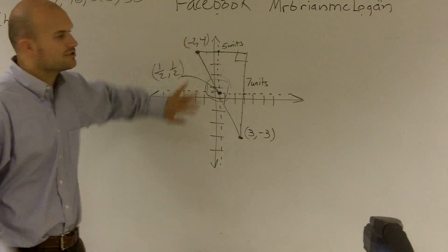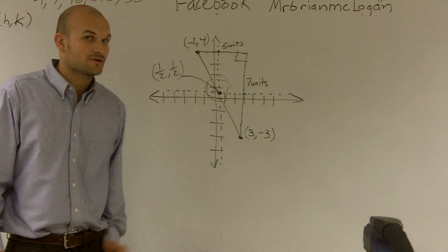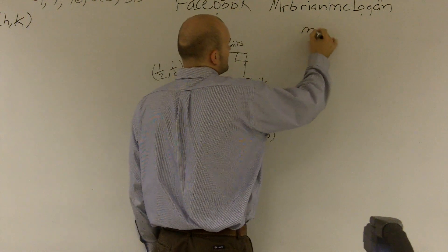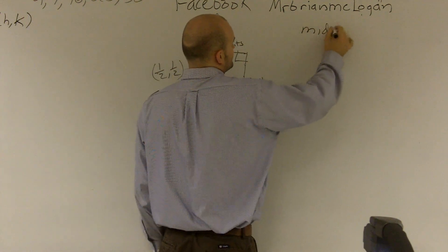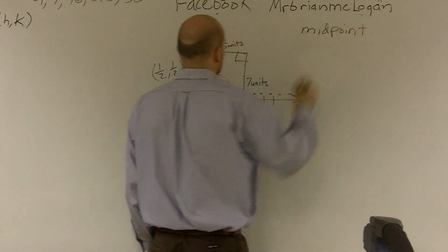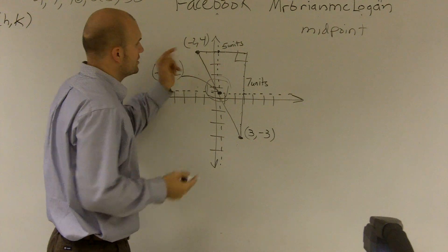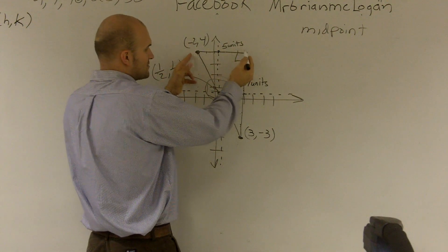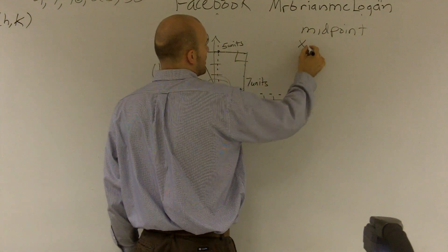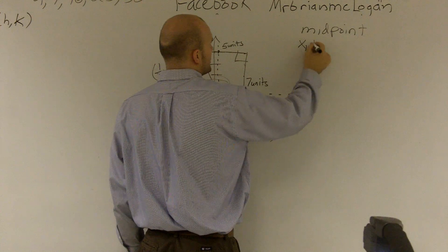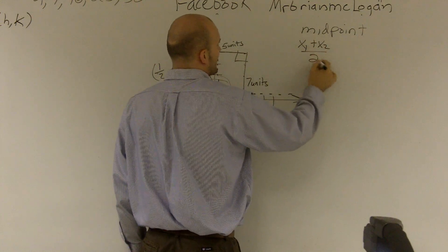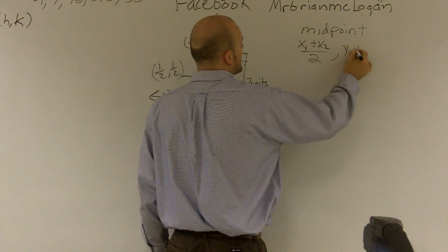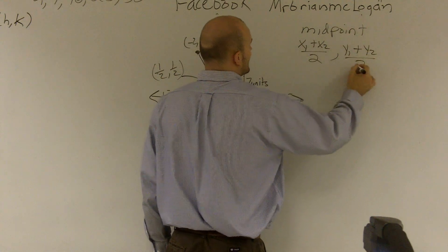Now, if you don't have a graph and you just have the two coordinates, here's the formula. To find the midpoint, I found the middle of my two x-values: I added x1 plus x2 and divided by 2. Then I took y1 added to y2 and divided by 2.